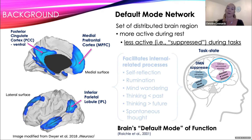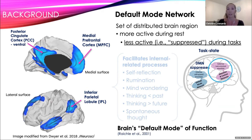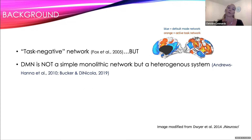What's interesting about this network is that it is suppressed when we're engaged in externally directed tasks. This is an adaptive feature of brain function that essentially allows us to toggle our attention between our internal states and the external environment. Initially it was thought that the DMN was a simple unitary task-negative network, but more recently we think that it's a complex heterogeneous system, and this is becoming more apparent during high cognitive processes.